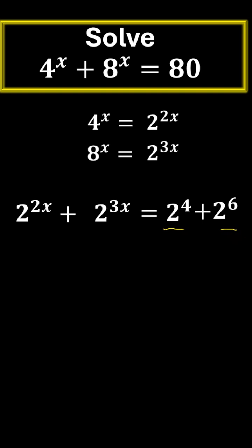Now, all our bases are bases of 2. We can go ahead and equate the powers. So for the smallest powers there, 2x will be equal to 4.